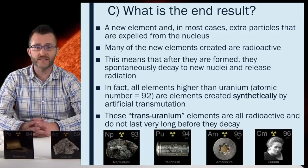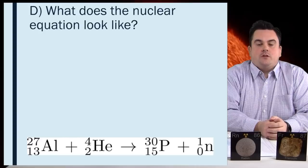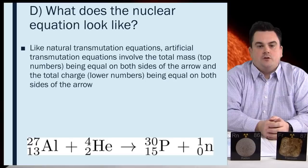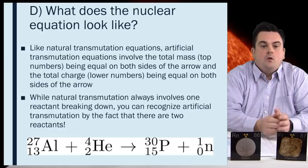What does the nuclear equation look like? Like natural transmutation equations, artificial transmutation equations involve the total mass, top numbers, being equal on both sides of the arrow, and the total charge, lower numbers, being equal on both sides of the arrow. While natural transmutation always involves one reactive breaking down, you can recognize artificial transmutation by the fact that there are two reactants.